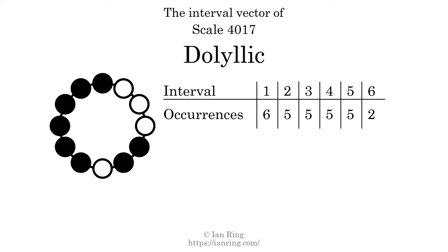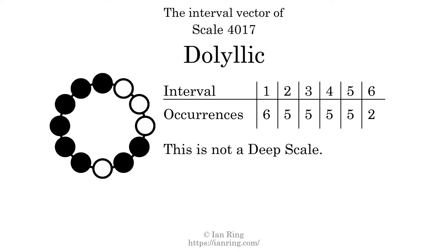There are 2 intervals with the size of 6 semitones. Each interval does not appear in this scale a unique number of times, so this is not a deep scale.